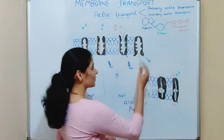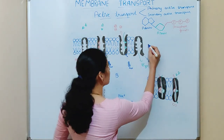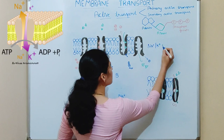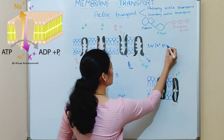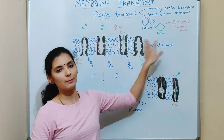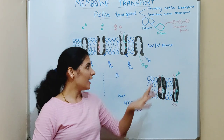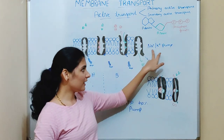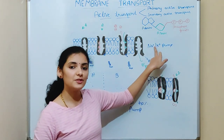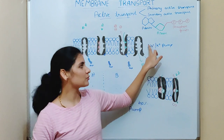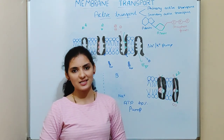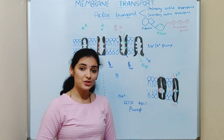The best example of primary active transport is the sodium-potassium pump, also known as the sodium-potassium ATPase. It is a very important pump in the animal cell. As the name indicates, the sodium-potassium pump helps in the movement of sodium and potassium in and out of the cell.